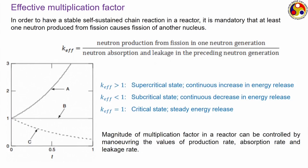An interesting situation arises with a supercritical reactor, as in Case A, where the rate of energy release continuously increases. This is analogous to a nuclear weapon or nuclear bomb, where we do not control the rate of reaction or deliberately make it highly supercritical, so that the rate of reaction keeps increasing and releases a large amount of energy within a very short duration of time.